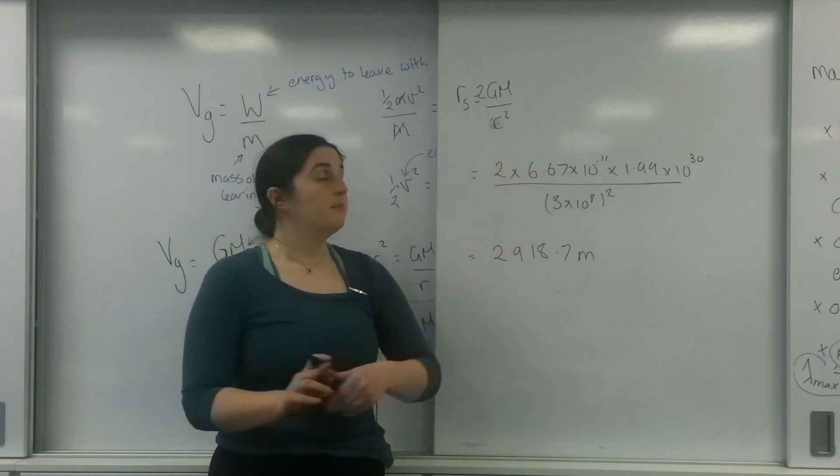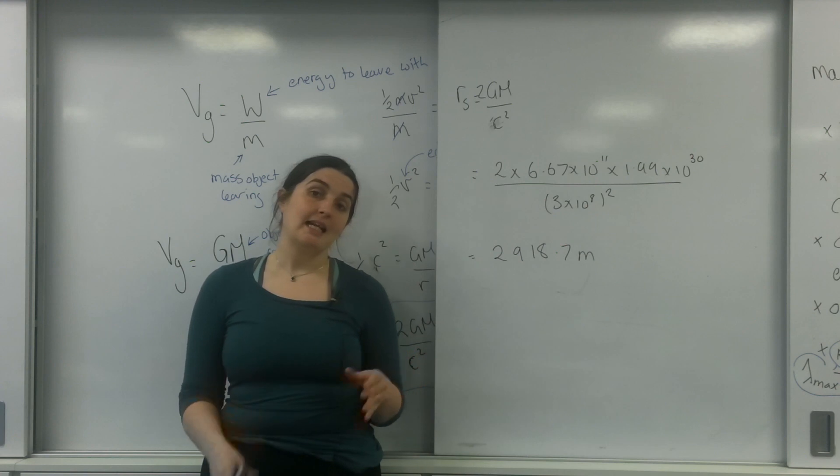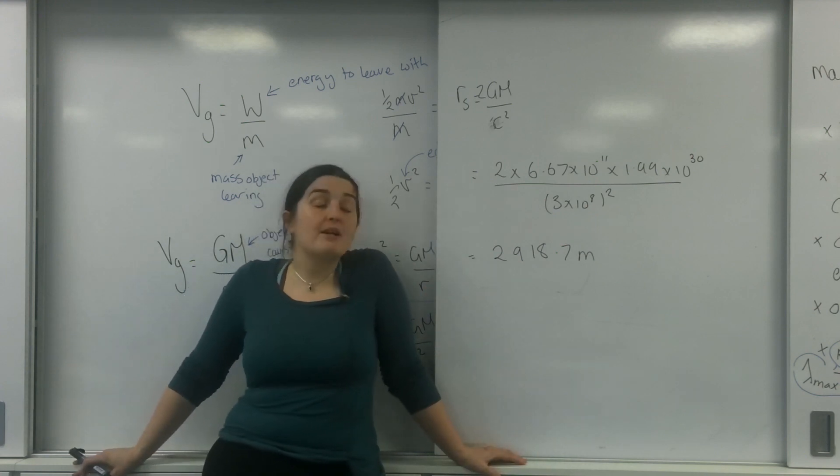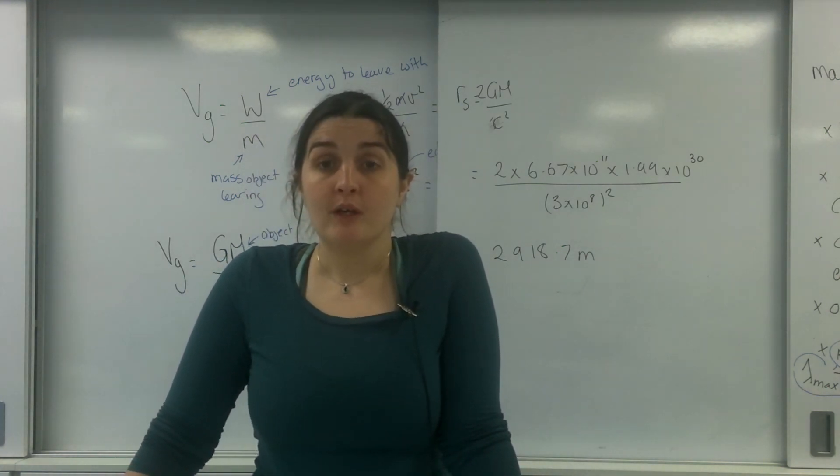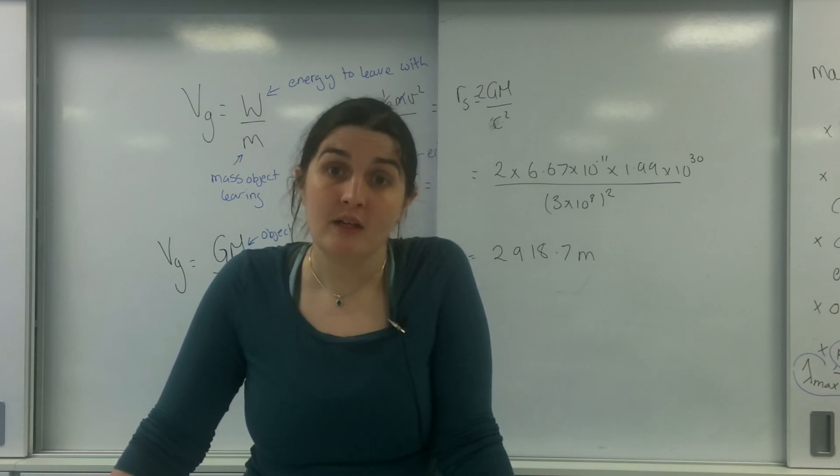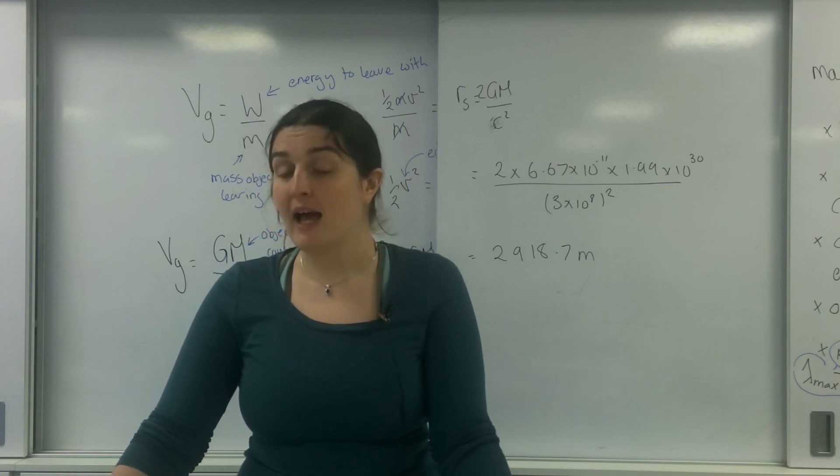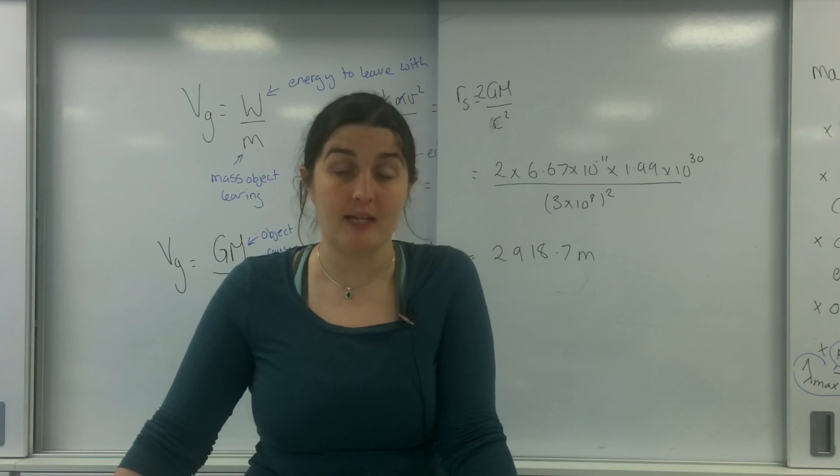So our star would need to collapse, the core would need to collapse to a radius of about almost three kilometres. If it did that, it would be able to become a black hole. But the problem is there's not enough mass in it to allow it to collapse that far. Which means that to be a star that has enough gravitational force to pull it in to its Schwarzschild radius, it's going to have to be a huge star.